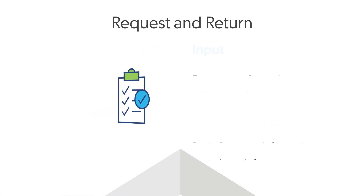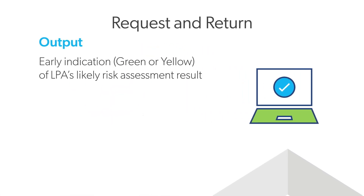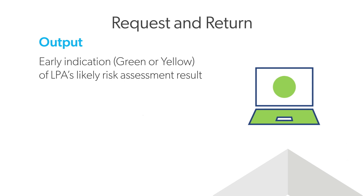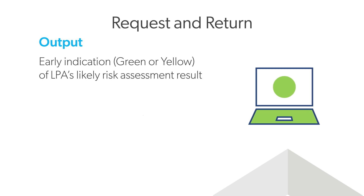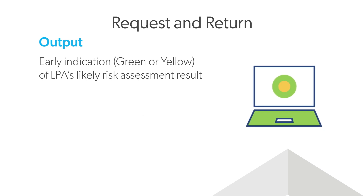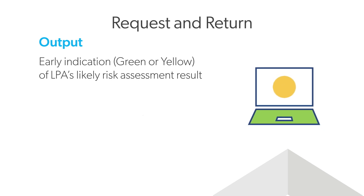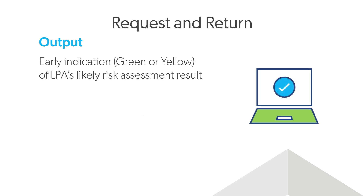Quickly receive an early indication of LPA's risk assessment result. Green typically indicates that if the data submitted to Risk Check does not change when the loan is submitted to LPA, an accept result should be expected. Yellow typically indicates more information may be needed to qualify.